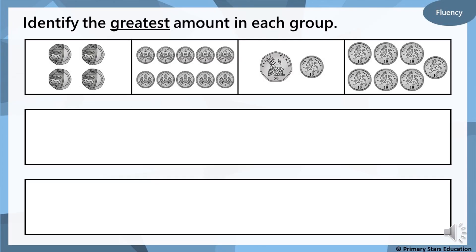The first task is to identify the greatest amount in each group. That word greatest means the biggest amount. So you need to count each of the boxes and then try and remember which one is the box with the greatest amount. So we've got 20ps: 20, 40, 60, 80. If your memory is a little bit rubbish like mine, you can always write the amount in or above the box just to help you remember.